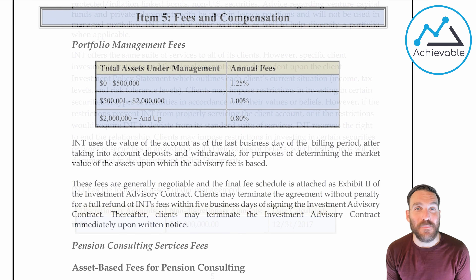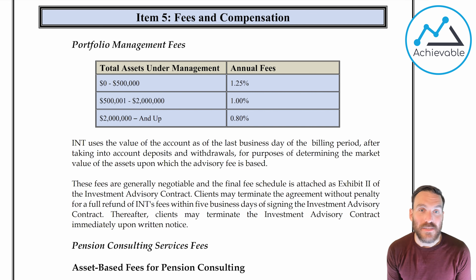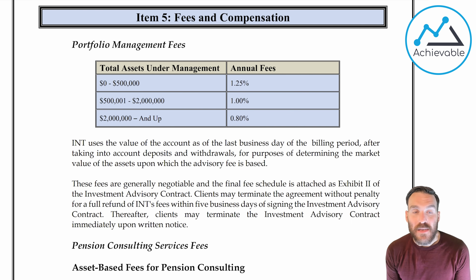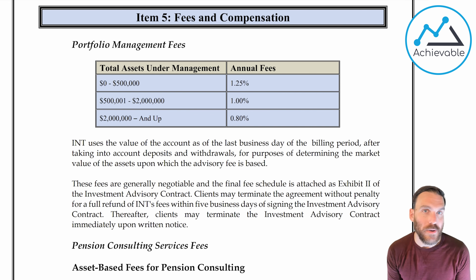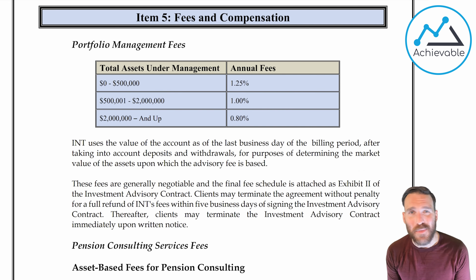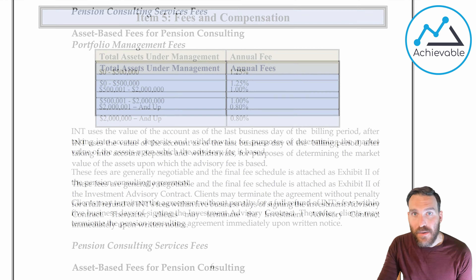Item number five is fees and compensation — probably one of the primary sections clients are going to open up and look at. This is what this advisor charges: an assets-under-management fee. Their highest fee, for anything from zero to half a million dollars, is 1.25%. From half a million up to 2 million it's 1%, and anything from 2 million upward is 0.8%. Typical advisors charge on the low end below 1%, and on the high end maybe 2% to 3%. These are pretty reasonable fees in the grand scheme of advisors.